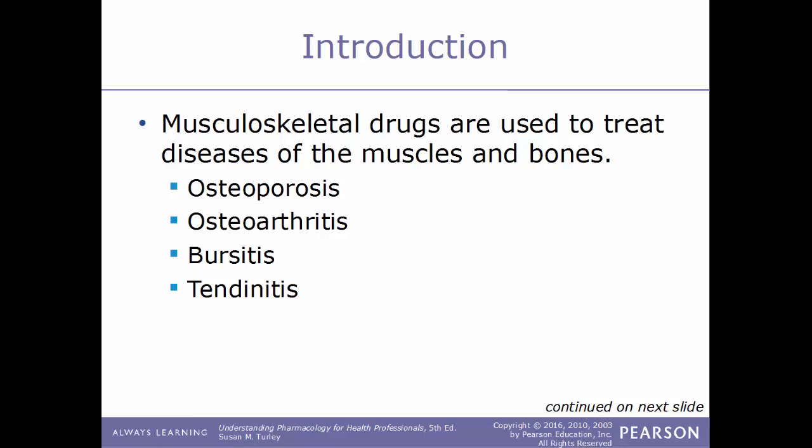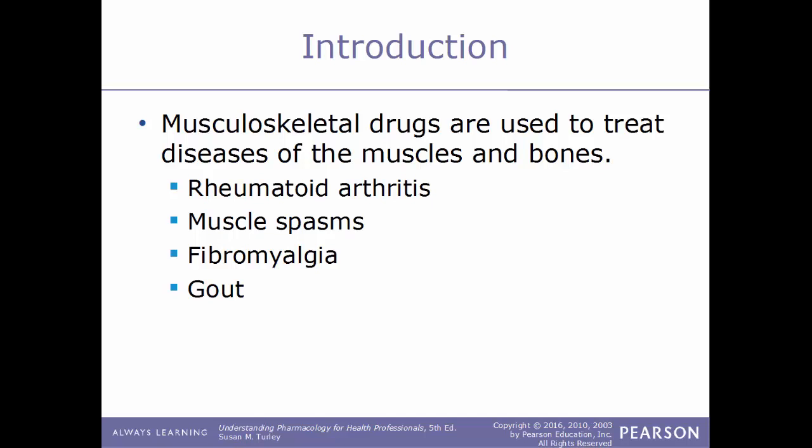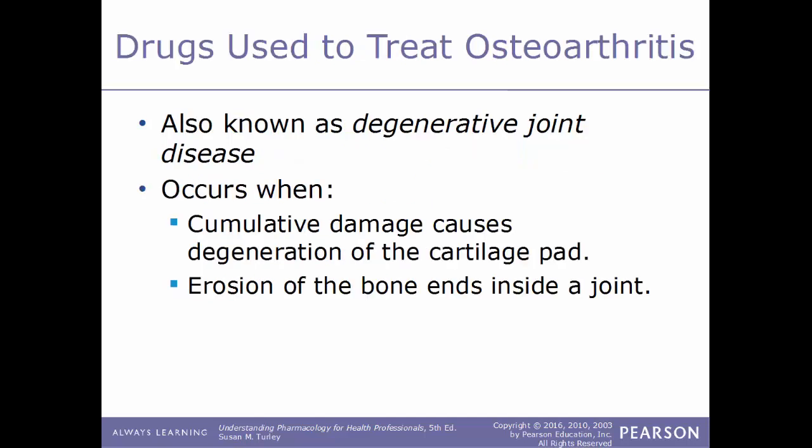Musculoskeletal drugs are used to treat diseases of the muscles and bones. Examples include osteoporosis, osteoarthritis, bursitis, tendonitis, rheumatoid arthritis, muscle spasms, fibromyalgia, and gout. Starting with drugs used to treat osteoarthritis — also known as degenerative joint disease — this condition occurs when cumulative damage causes degeneration of the cartilage pad induced by normal wear and tear on the joints, resulting in erosion of the bone ends inside a joint.